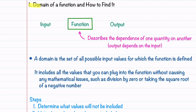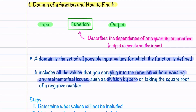Let's begin by talking about what the domain of a function is and how to find it. A function describes the dependence of one quantity on another — the output depends on the input. The domain is the set of all possible input values for which the function is defined. It includes all the values that you can plug into the function without causing any mathematical issues, such as division by zero or taking the square root of a negative number.